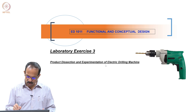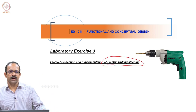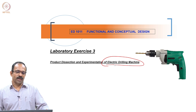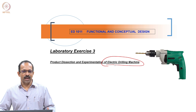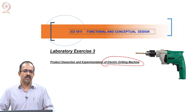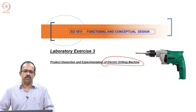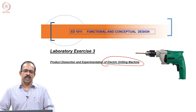Today we will look at the experimentation of an electric drilling machine, which is a handheld drilling machine. As you know, a drilling machine has got electrical elements and mechanical parts, so it is actually a combination of both electronics and mechanical elements. You will try to see how to do the systematic dissection of the product, then identify the product structure as well as look at the parts and their function.